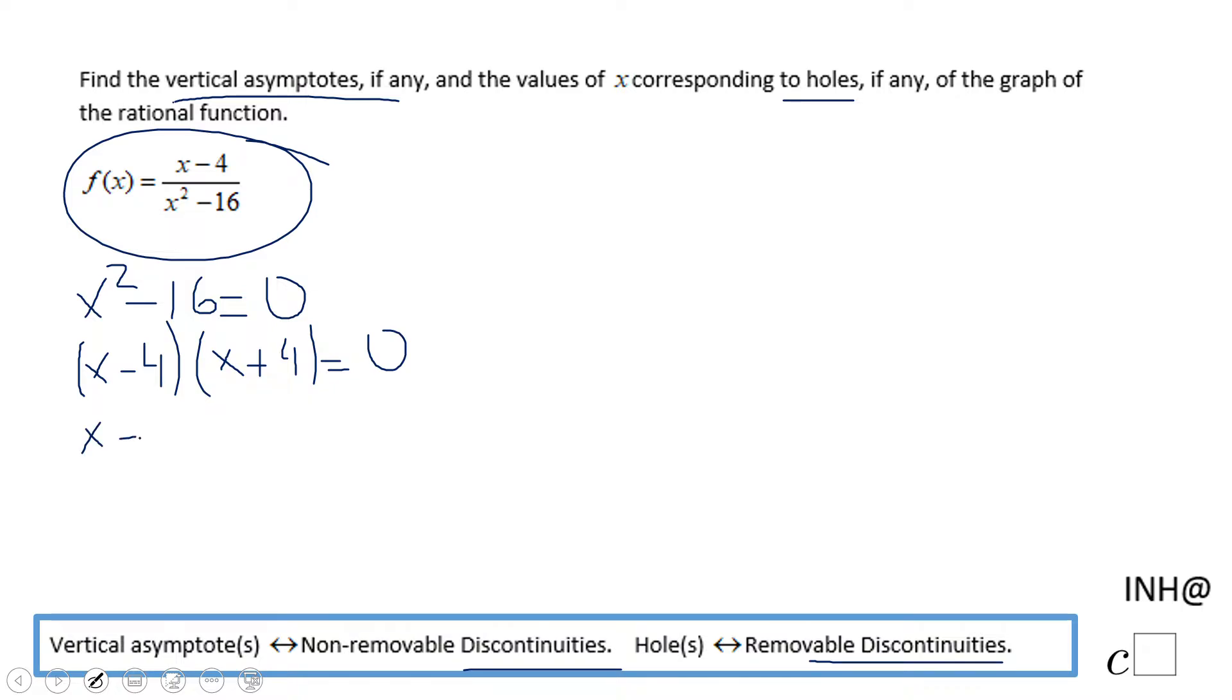We're going to set each factor equal to zero and we get x equals 4, x equals negative 4. These are what we call the discontinuities.